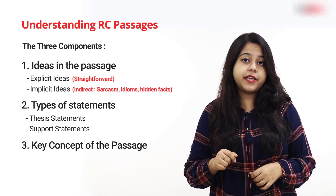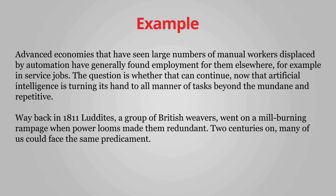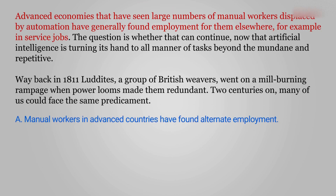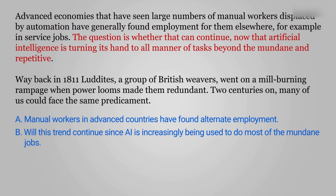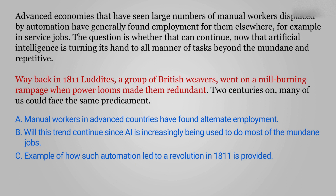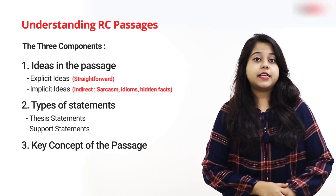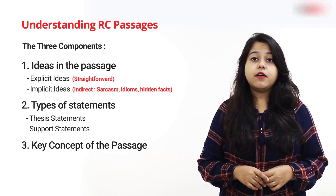Let's look at the same example. You can pause the screen and read the passage thoroughly. In this passage, the author talks about four ideas: manual workers in advanced countries have found alternate employment; will this trend continue as artificial intelligence increasingly does mundane jobs; an example of how such automation led to a revolution in 1811 is provided; and even after two centuries, this predicament persists. The primary motive of the author is to convey the difficult situation we are in with machines taking over jobs — these support sentences help bring out the key concept.